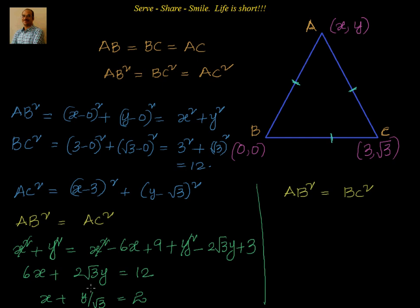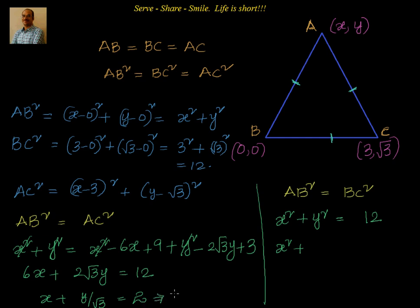From x + y/√3 = 2, we get y = √3·(2 − x). Now we substitute this into AB² = BC², giving us x² + [√3·(2 − x)]² = 12, which becomes x² + 3·(2 − x)² = 12.